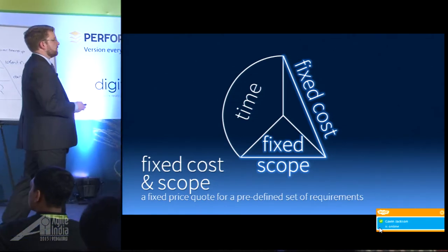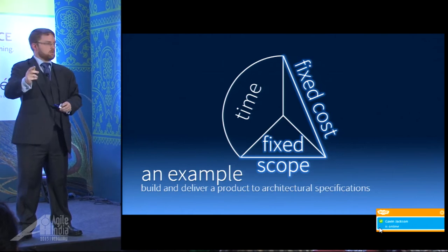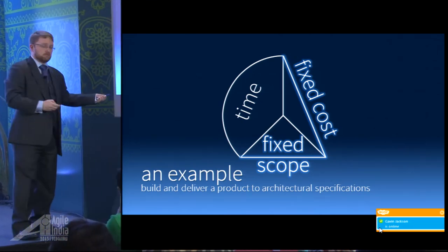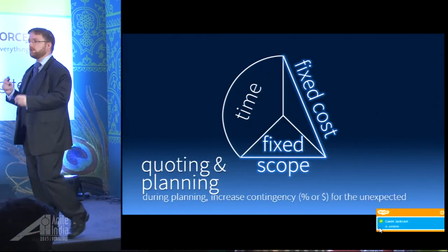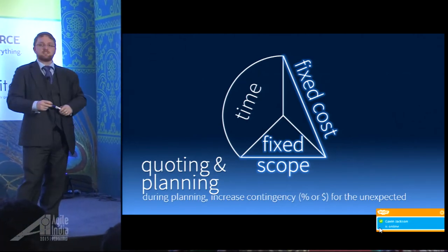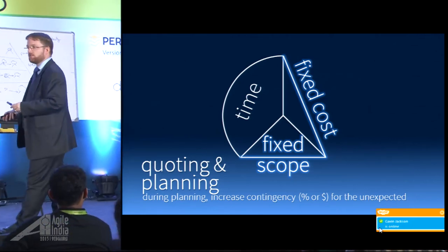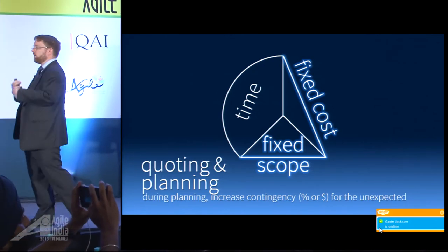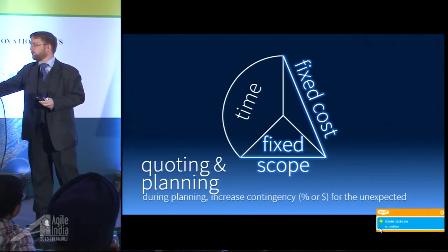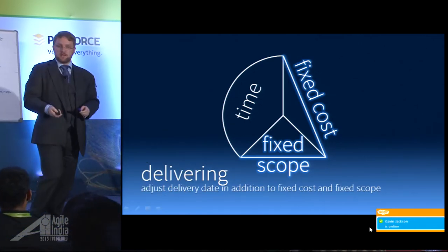Let's look at combinations. Fixed cost, fixed scope — this is terrible. You might have some flexibility in due date, but it's going to cost a million rupees and here is our list of specifications. Does that sound agile to you? No. It's possible to plan it, but you need to increase your contingency. Most organizations run about a 30% contingency. The level of contingency depends on the risk — where the risk is high, you're going to increase your contingency. You're delivering this like a normal agile project, without many changes.